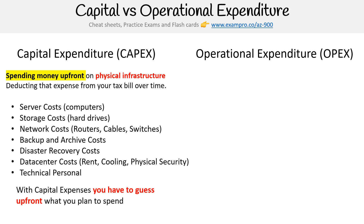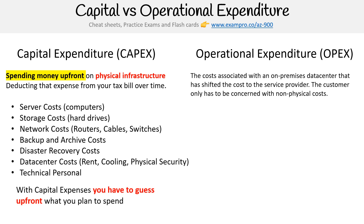Now let's look at operational expenditure. Operational expenditure is the cost associated when an on-premise data center has shifted that cost to the service provider — in this case, the cloud service provider — and the customer only has to be concerned with non-physical costs.